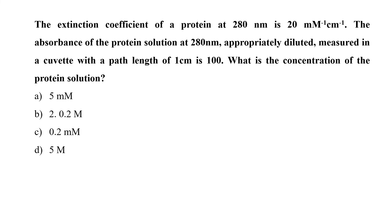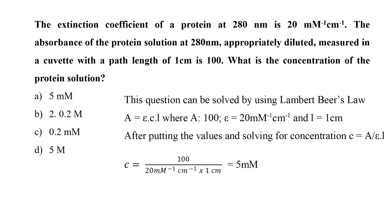The extinction coefficient of a protein at 280 nanometer is 20 millimolar per centimeter. The absorbance of the protein solution at 280 nanometer, appropriately diluted, measured in a cuvette with a path length of 1 centimeter is 100. What is the concentration of the protein solution? If we solve this question, then we will find that the Lambert-Beer law is very easy to use in this case. Here, we are being given the absorbance, that is 100, the molar extinction coefficient, that is 20 millimolar inverse per centimeter inverse, and the path length is 1 centimeter. If we solve it for the concentration, the concentration comes out to be 5 millimolar, that is option A.